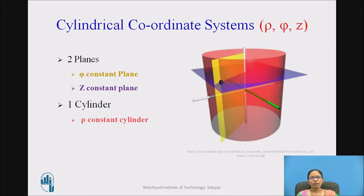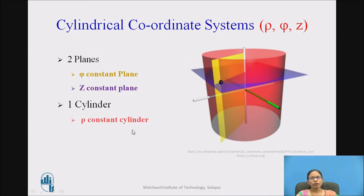Let us revise the cylindrical coordinate system which is rho-phi-z. It consists of two planes: a phi-constant plane and a z-constant plane. The phi-constant plane is shown in yellow, the z-constant plane is shown in purple or violet color. And one rho-constant cylinder is shown here in pink. So that is the cylindrical coordinate system.